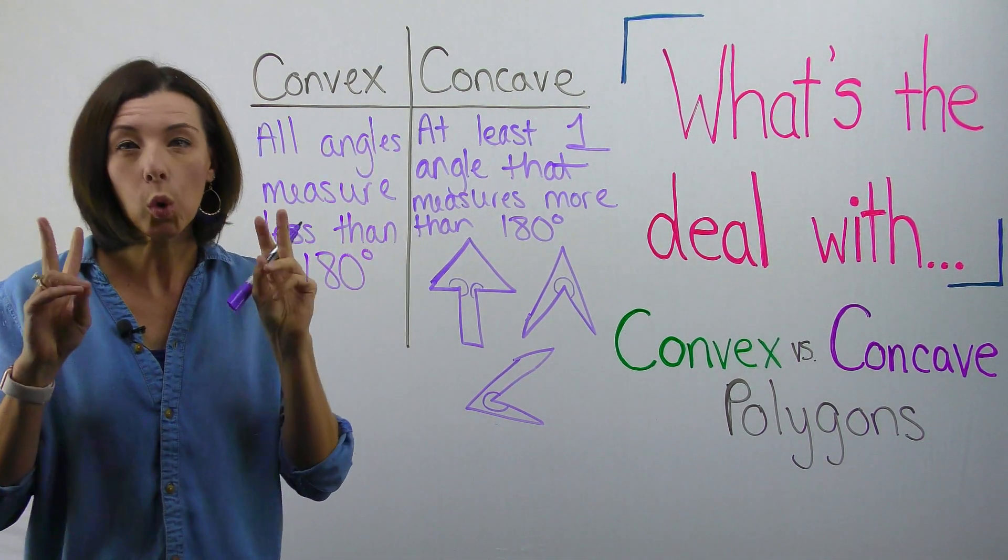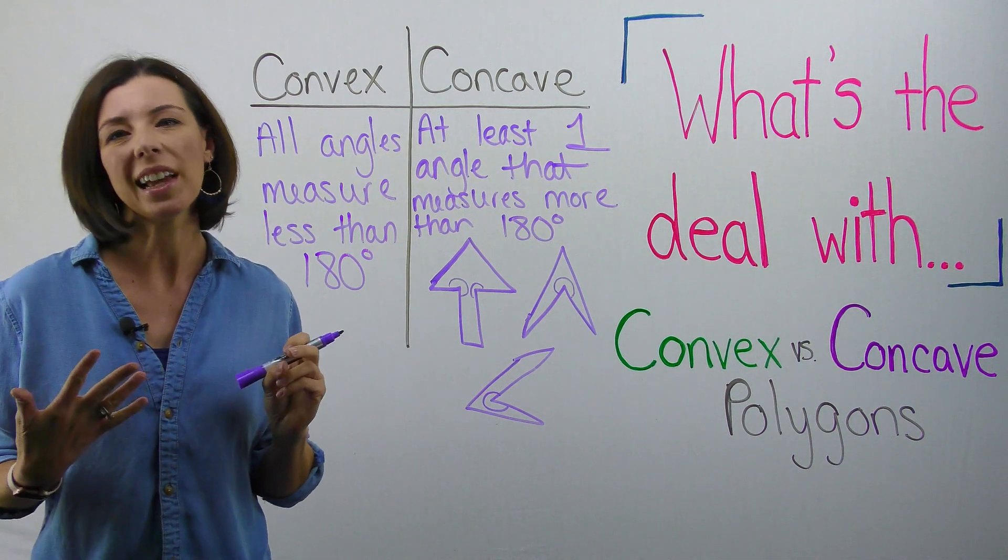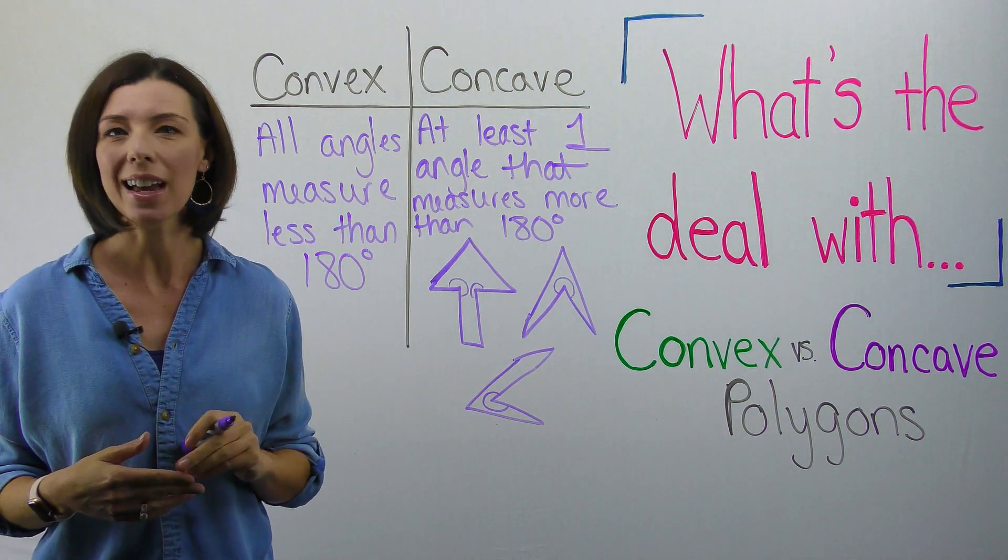Again, these would be your more normal looking polygons like squares, rectangles, hexagons, octagons, that sort of thing.